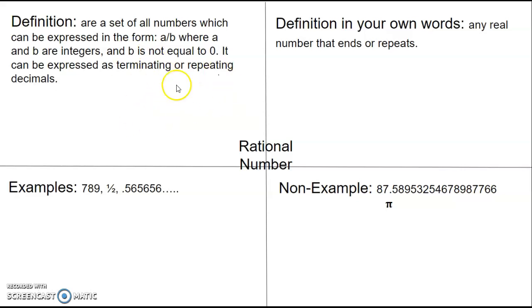So really, all that's saying is a rational number is any real number that ends or repeats. So that shows me that I know what that means. And that's a definition that I can understand and can use in class. And then down here, I provided some examples. So you can see that these all end or repeat.